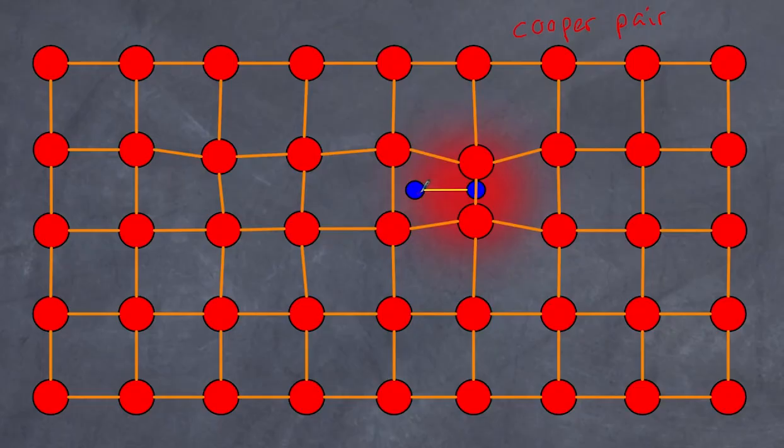I want you to understand that the distance represented here between my first electron and my second electron is not quite accurate to scale. In fact, in terms of the distances between the lattices here, the distance between these two electrons is a thousand times larger. But nonetheless, there is a weak interaction between the two due to this effect of distortion of the lattice.